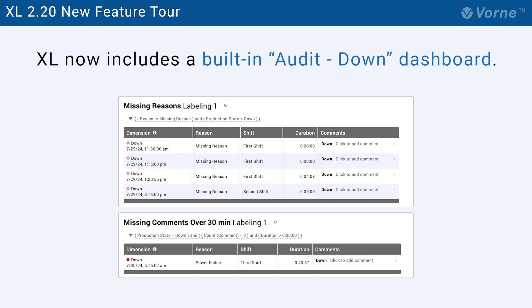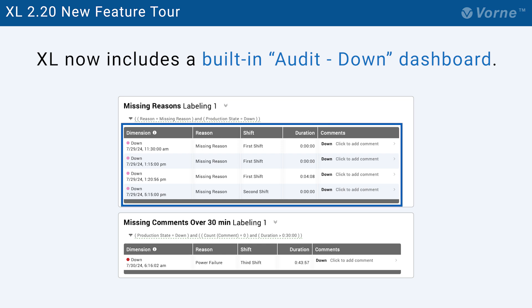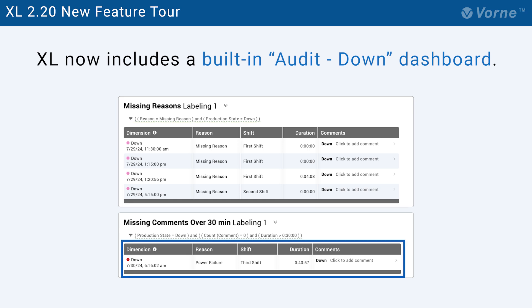Another way we're helping you improve data completeness is through the new built-in dashboard called Audit Down. There are two key things we're making it super easy to do through this dashboard. First, you can quickly identify and update down events that are missing reasons. Second, you can do the same for down events that really should have a comment but don't. We recommend setting a policy that all down events longer than say 30 minutes should have an associated comment that captures context and insights.